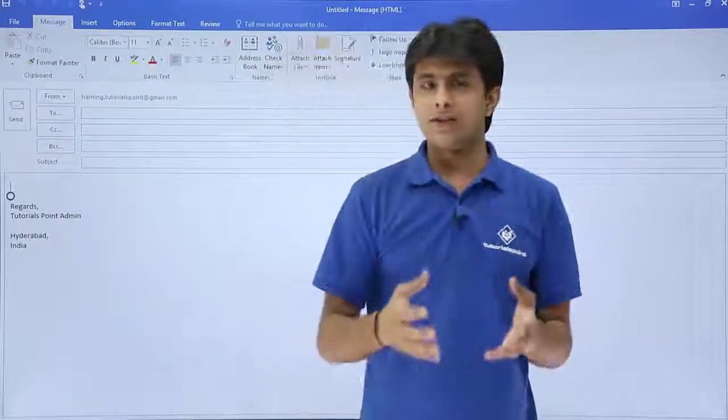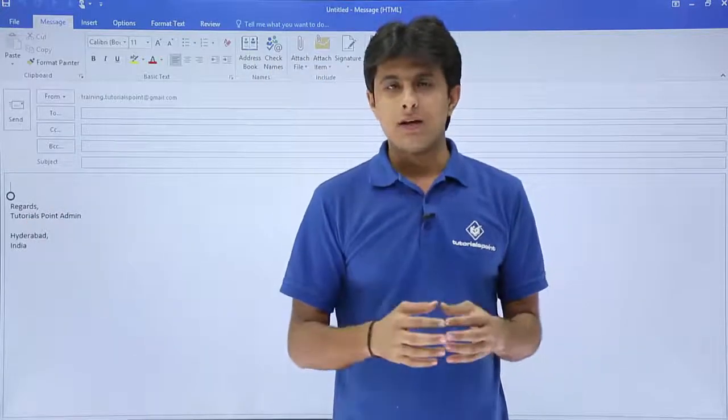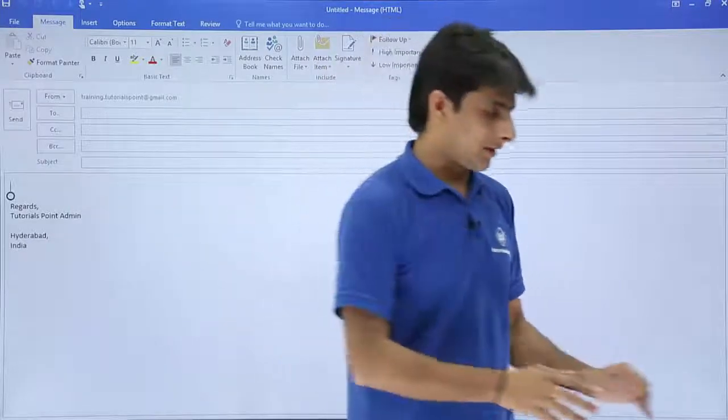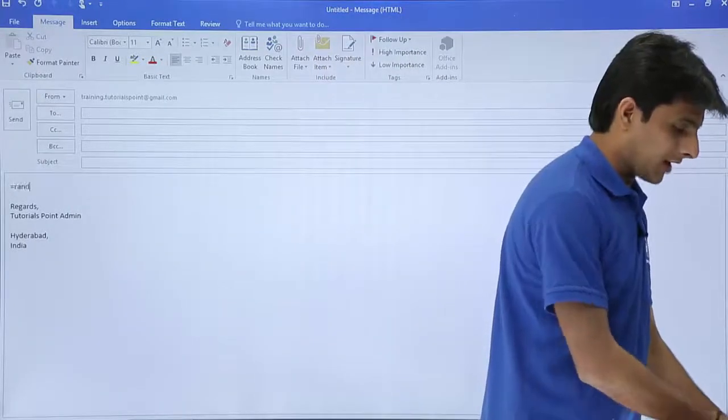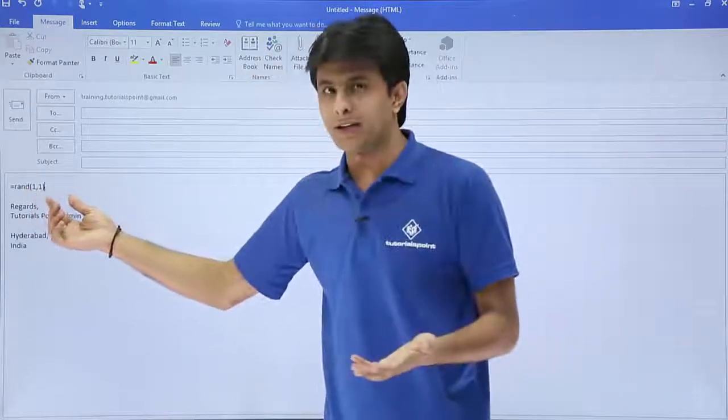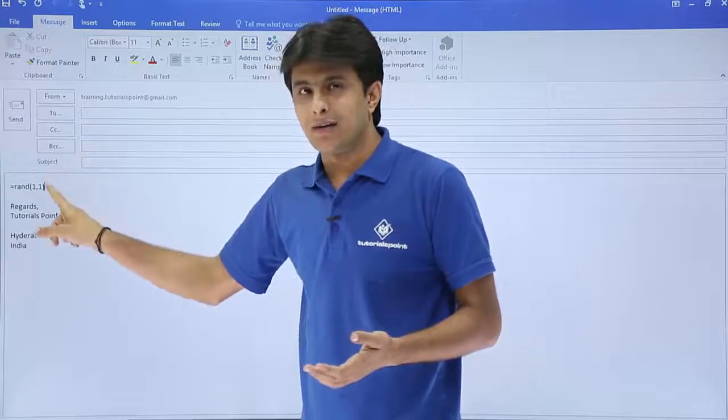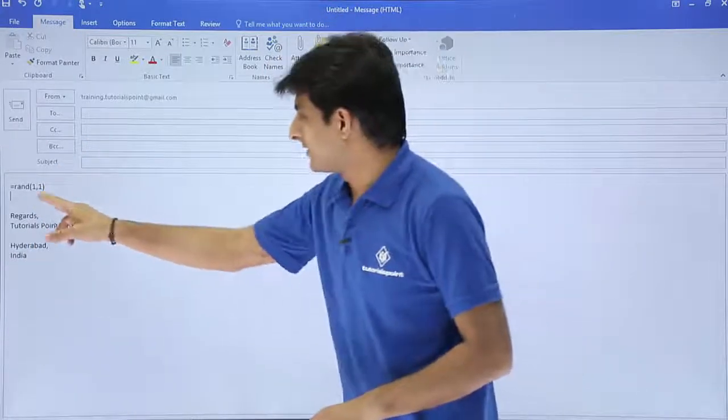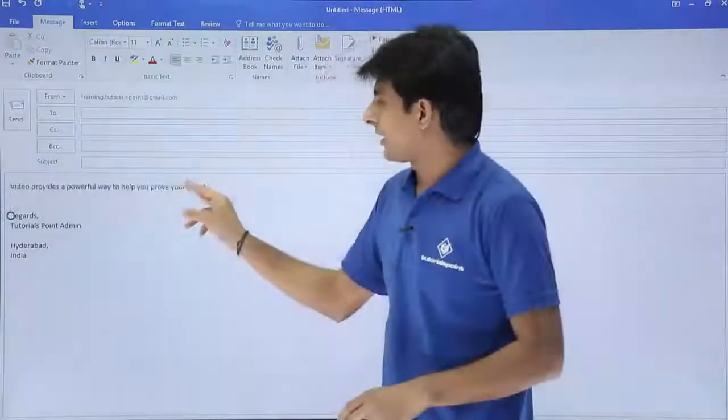In this body text or message body, I'll type some text. There are many methods - you can just keep on typing here, or I can give you a formula. You can type =rand(1,1) and it will give a random text, one sentence and one paragraph. Once I press enter, you'll get one sentence with one paragraph.